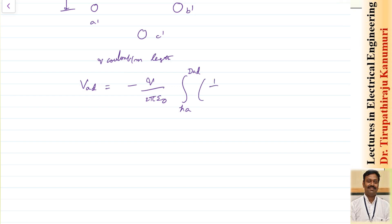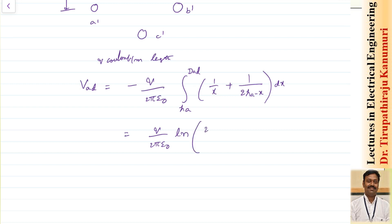That will be 1 by X due to conductor A, and it also has an image conductor A dash. For a given value of X, this can be represented as 1 by 2 times of H_A minus X — the distance of image conductor A dash with respect to that location. So this will be equal to Q by 2π ε₀ into ln of (2H_A minus D_AD) divided by D_AD. Let us take this as equation number one.